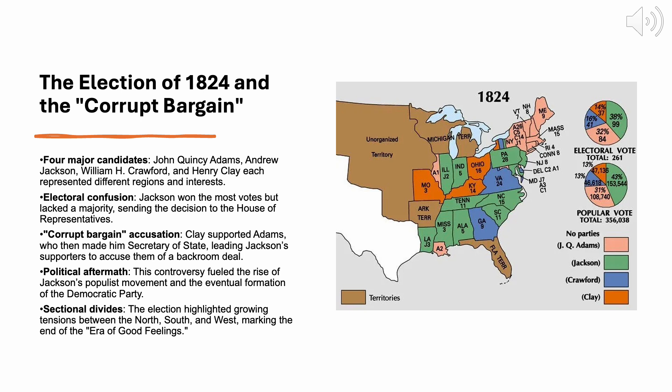The election revealed a growing rift between different sections of the country — North, South, and West — each rallying behind its own candidate. Andrew Jackson, despite being a political outsider without formal education or elite connections, shocked the political establishment by winning the popular vote and the most electoral votes. However, he did not secure a majority of electoral votes, which meant the decision fell to the House of Representatives as required by the 12th Amendment. In the House, the top three candidates — Jackson, Adams, and Crawford — were eligible for consideration.